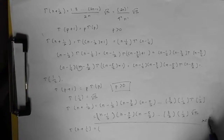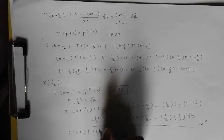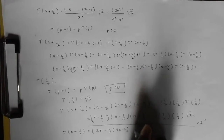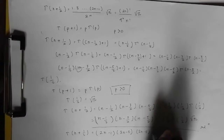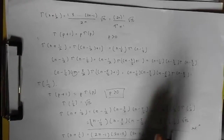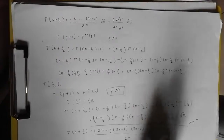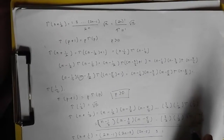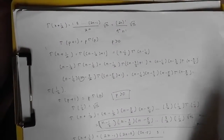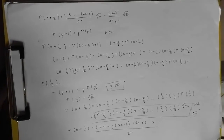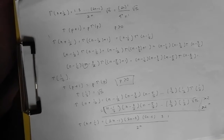We multiply each factor by 2, so we bring out a factor of 2^n in the denominator. This gives us the numerator as (2n - 1)(2n - 3)(2n - 5) ... times 3 times 1, all divided by 2^n. This establishes the first equality.